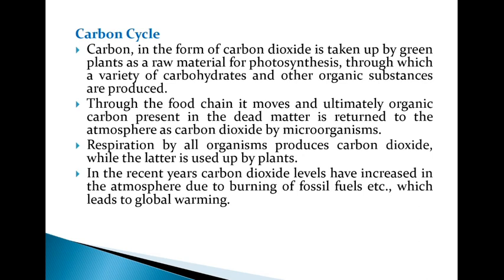Coming to the carbon cycle — carbon in the form of carbon dioxide is taken up by green plants as a raw material for photosynthesis, through which a variety of carbohydrates and other organic substances are produced. Through the food chain it moves, and ultimately organic carbon present in dead matter is returned to the atmosphere as carbon dioxide by microorganisms.